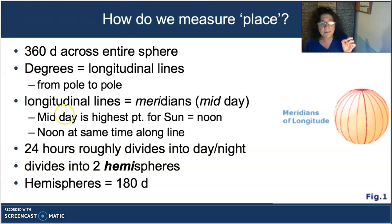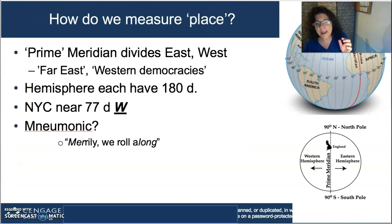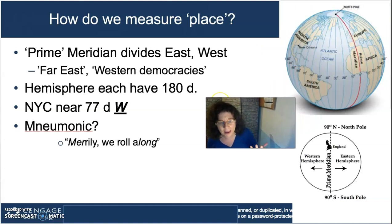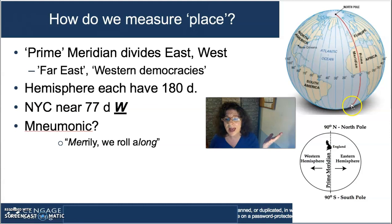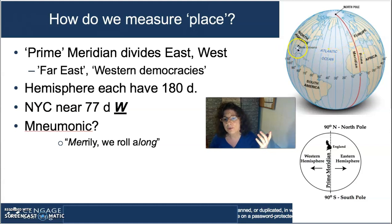We're getting more precise with locations now. Among all the meridians on earth, the prime meridian — zero degrees — was claimed by the British, who ruled the seas in the 1800s when this was all being developed. Anything west of the prime meridian is the western hemisphere, and anything east of it is the eastern hemisphere.